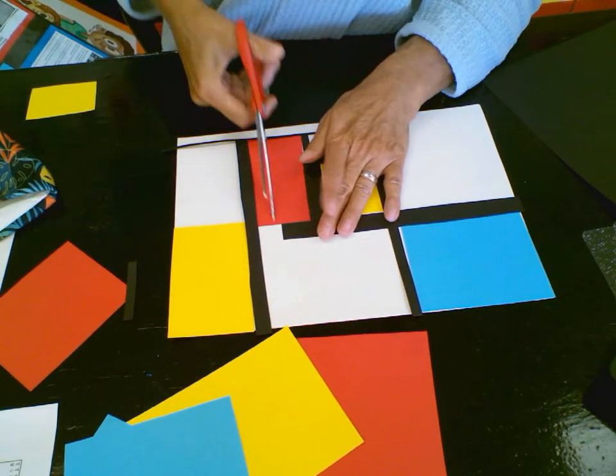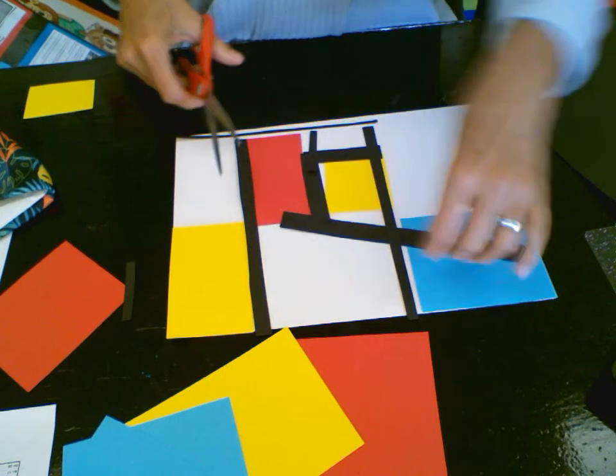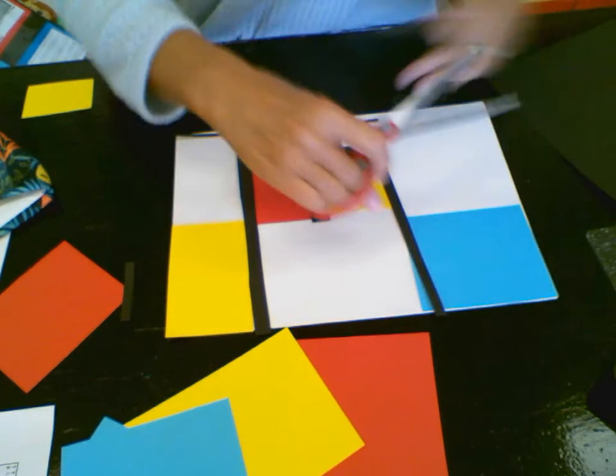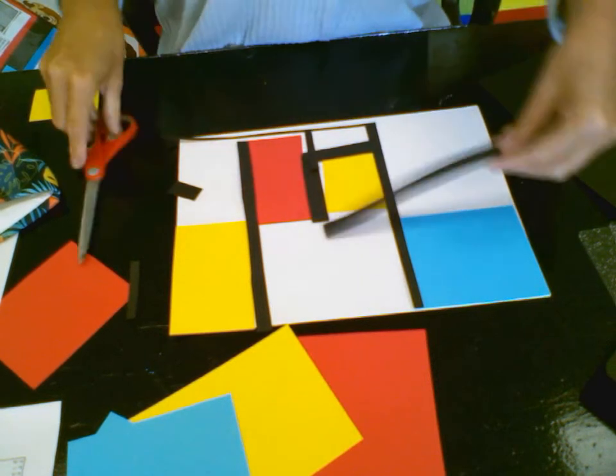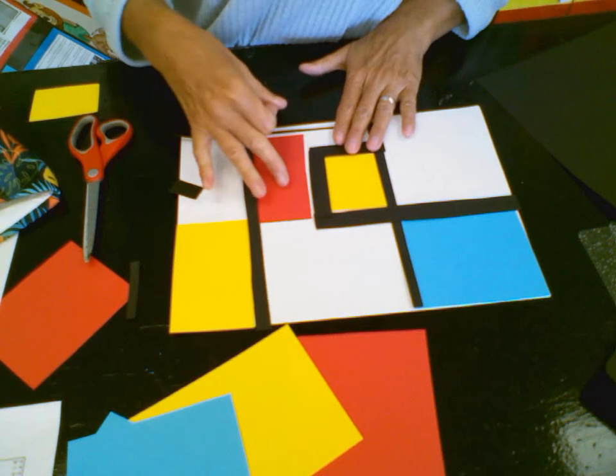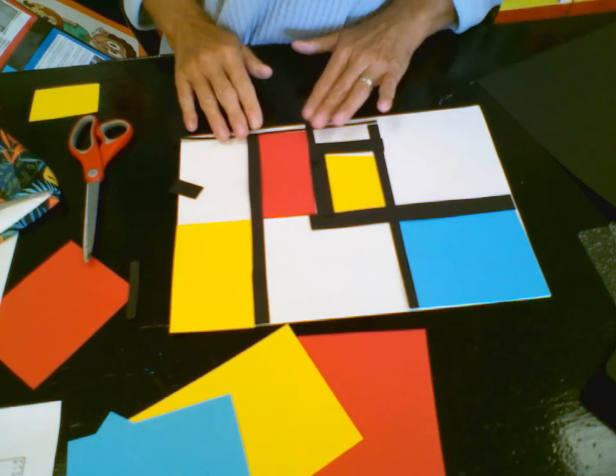He creates a piece of art that doesn't have pictures like horses or people. So after you lay all your strips out and decide exactly where you want them to go, then you need to glue them down.